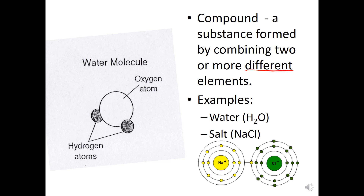A compound is the combination of two or more different elements that have a chemical bond. I imagine it as the two atoms holding hands. In the example of sodium chloride there's a chemical bond between them, and in the water molecule you have oxygen and two hydrogen atoms bonded together — that's a compound. It's also considered pure.